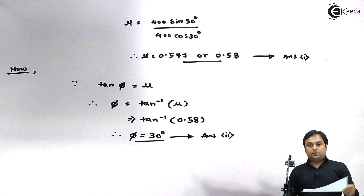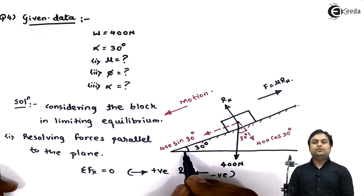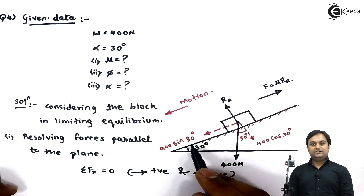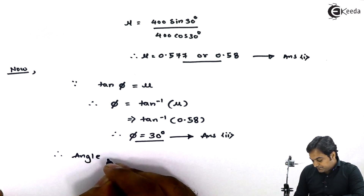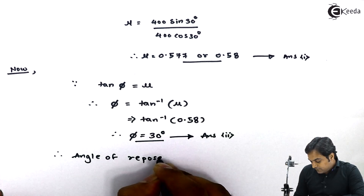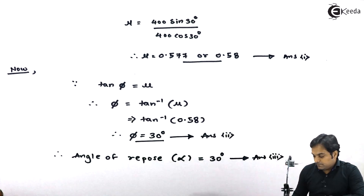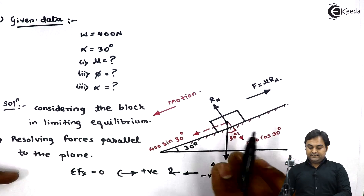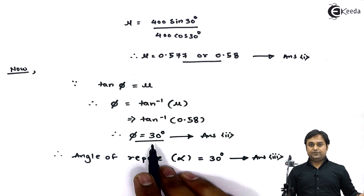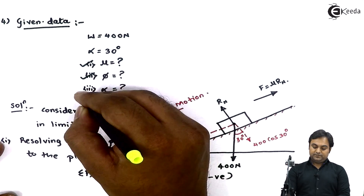The third question is alpha — the angle of repose. The alpha value is the same as that of the inclined plane because we call this inclination the angle of repose. Therefore, angle of repose alpha equals 30 degrees. In summary, the three answers are: coefficient of friction mu equals 0.58, angle of friction equals 30 degrees, and angle of repose equals 30 degrees. All three parts have been solved, completing question four.